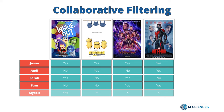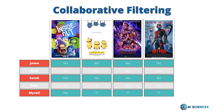We liked Inside Out but didn't see Minions, Avengers, and Ant-Man before. So based on our friends' ratings of whether they liked these movies or not, we are going to see how collaborative filtering recommends a movie. We saw Inside Out and liked it, but Andy and Sam didn't like Inside Out, so we can eliminate those two rows. Jason and Sarah liked Inside Out.